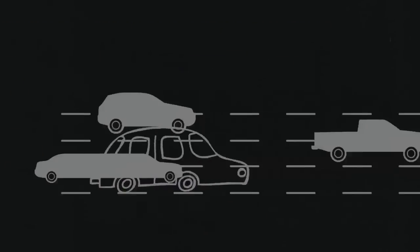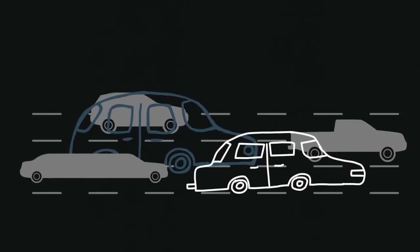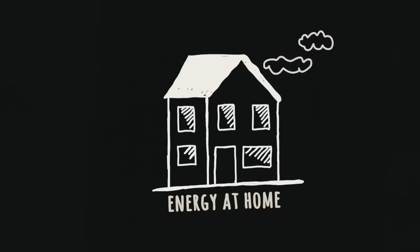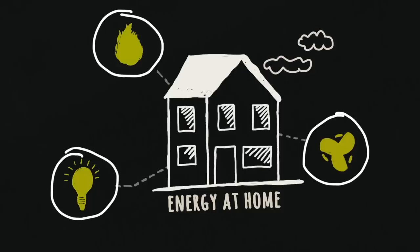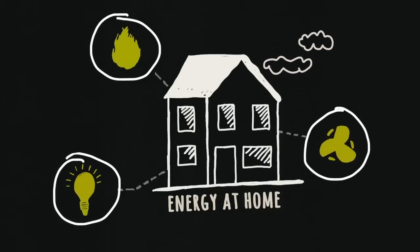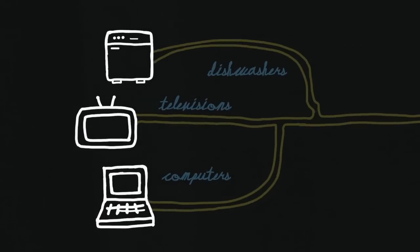One reason is that we drive big cars long distances here. But the other is that we use a lot of energy at home for heating, cooling, and lighting, as well as accessing electricity to power our dishwashers, TVs, and computers.